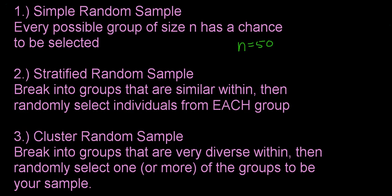All right, cluster random sampling. Here you're going to break your population into groups that are very diverse within. We call these heterogeneous groups. You want to create groups that are already a very nice mix. So each group you create is already very mixed up, right? It's all very diverse. Then you label your groups and you randomly select one or more of the groups to be your entire sample.